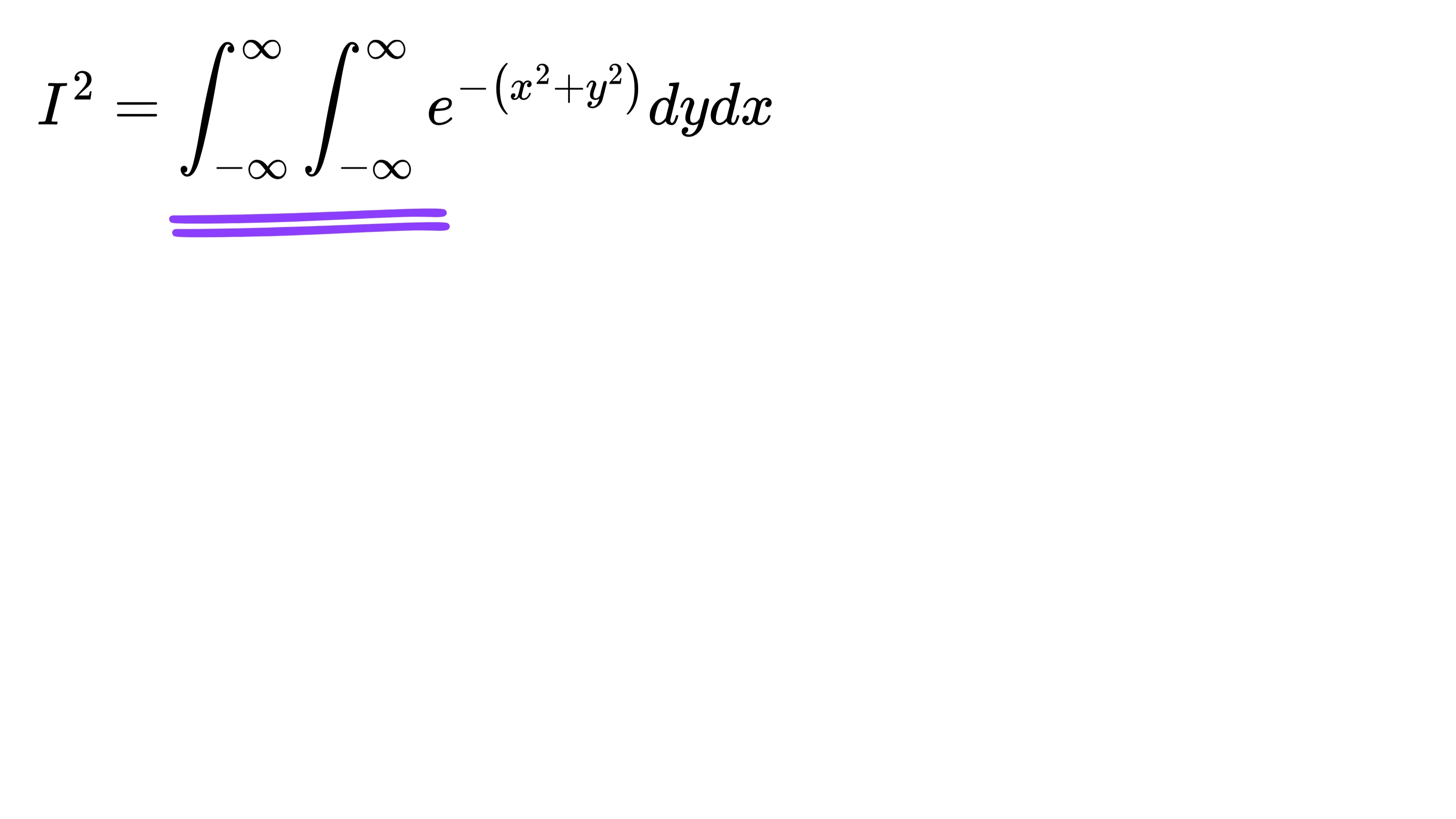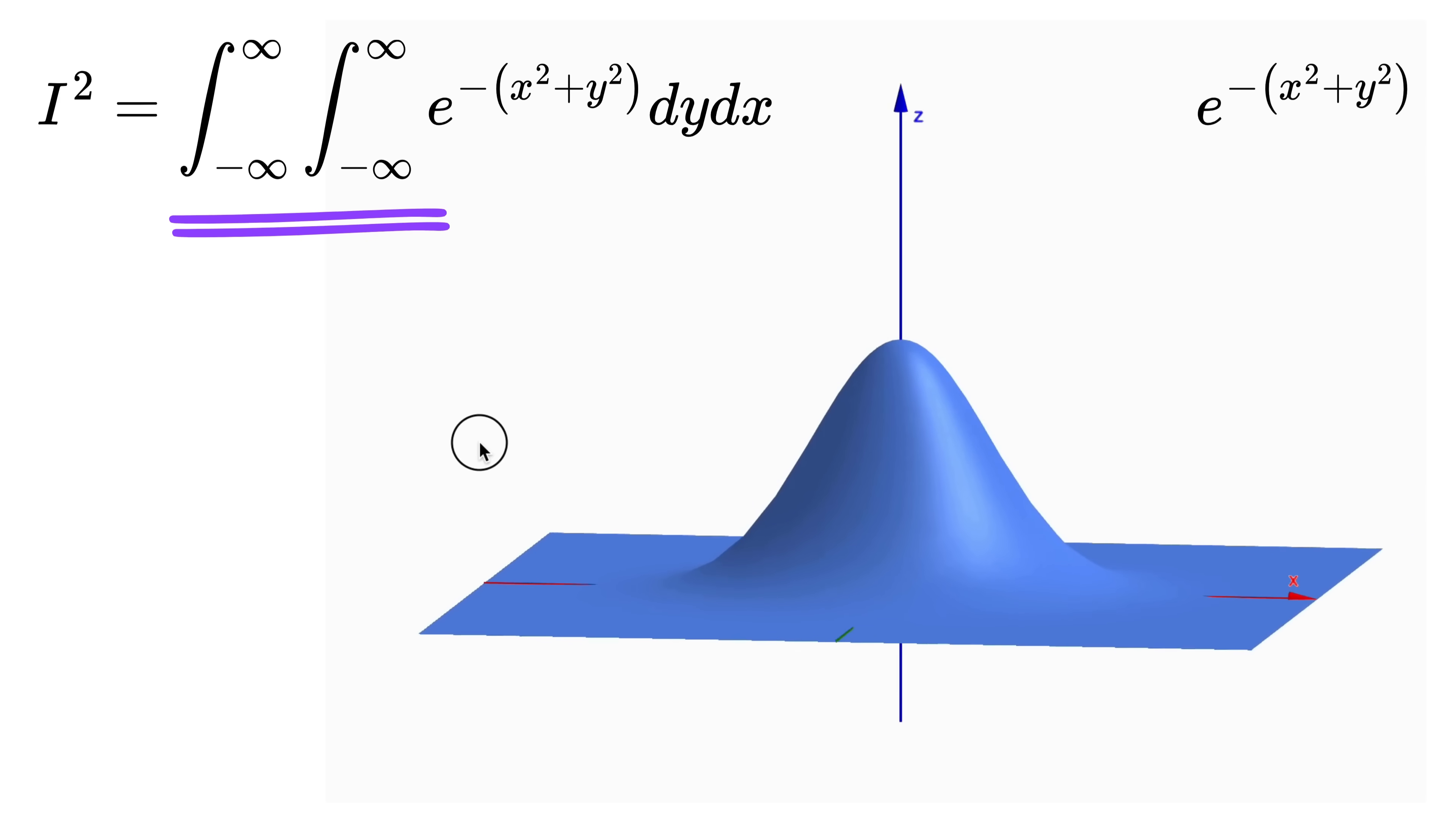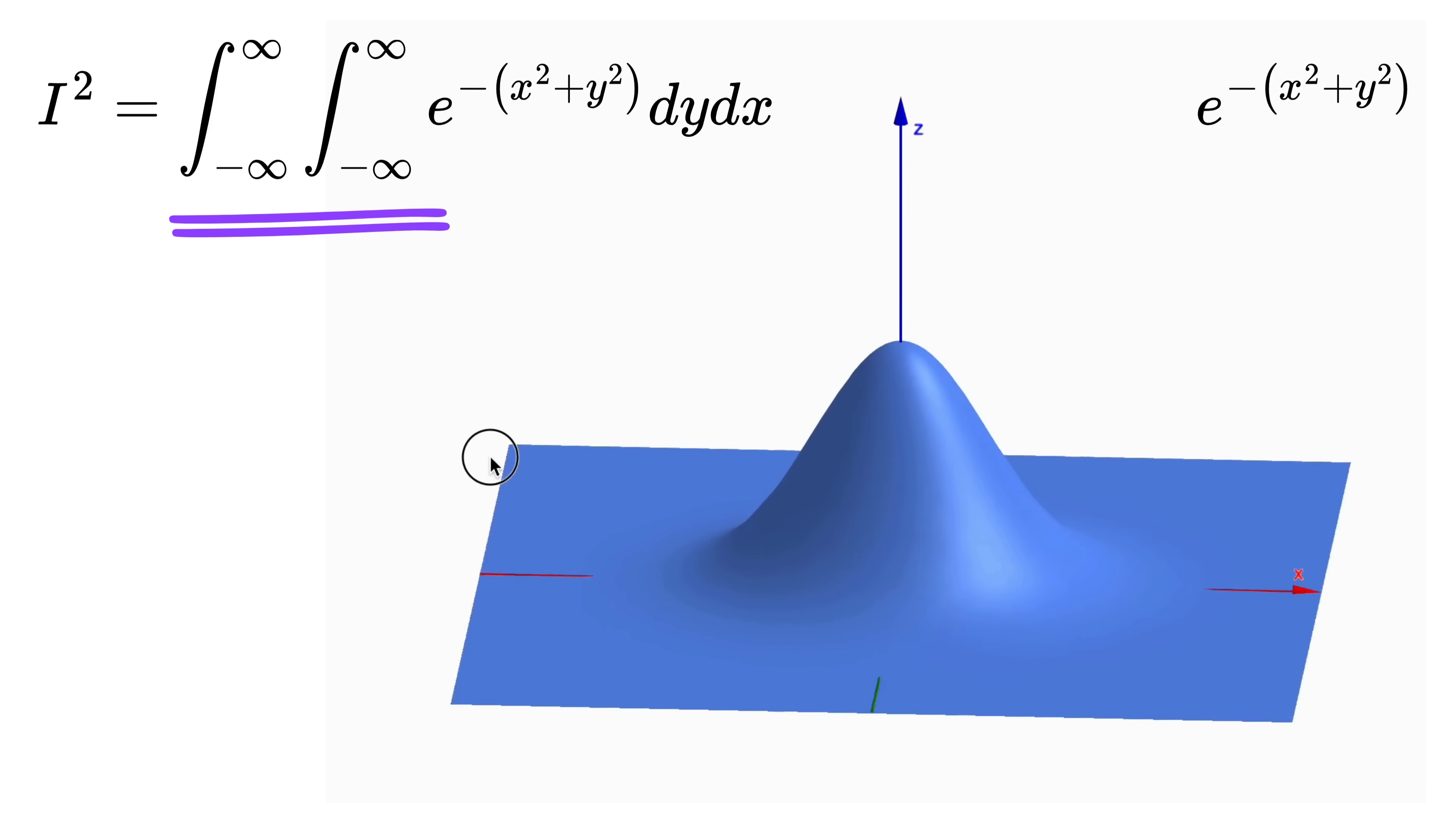By the way, what does this double integral even mean? Well, think of it like this. Instead of just calculating the area under this curve, like we did in the one-dimensional case, now we're calculating the volume under the surface e raised to minus x squared plus y squared, which will look like this.